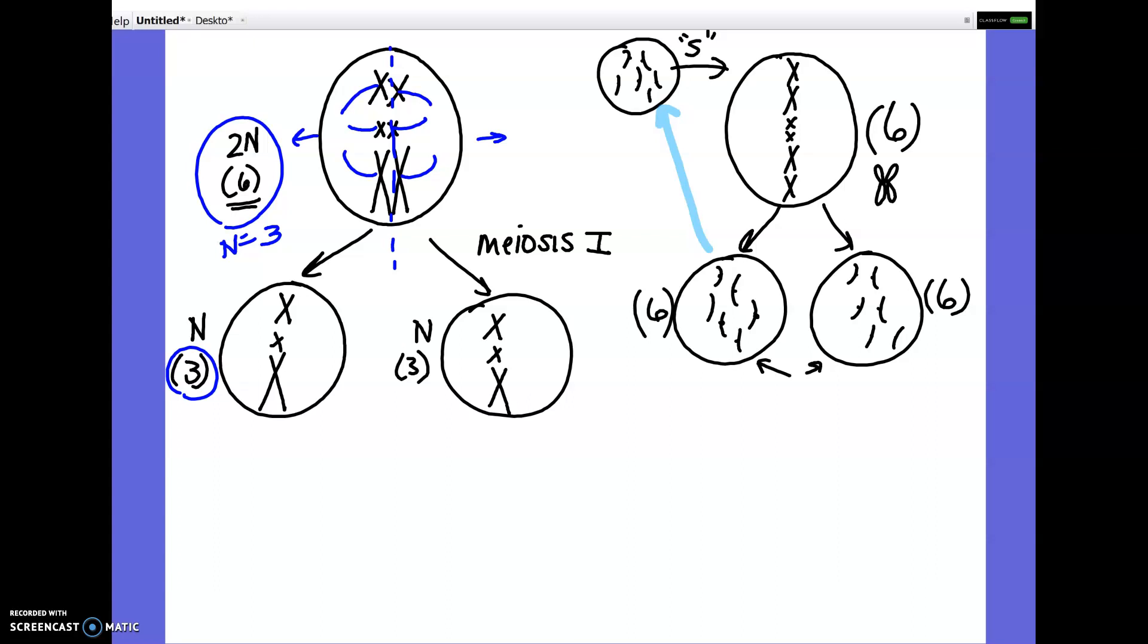This, in this scenario on the left, with meiosis, these are not identical to the cell before S. This cell before S, just like the other one, was 1, 2, 3, 4, 5, 6. They became 6 X's, and now they're going through meiosis. So notice this cell before S looks nothing like the cells at the end of meiosis 1.